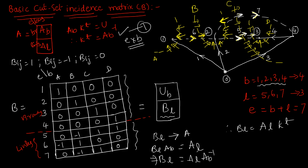This is how the basic cut set incidence matrix is designed. In the coming video, we are going to learn about the augmented cut set incidence matrix B cap, the basic loop incidence matrix C, and the augmented loop incidence matrix C cap. These matrices will tell us the incidence between elements and nodes, branches, paths, and loops. Later, we can use this terminology to analyze the power system. This video is only about the basic cut set incidence matrix. I hope this video is clear for everyone. Thank you so much for watching.